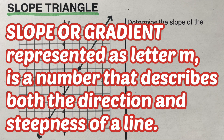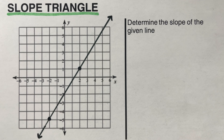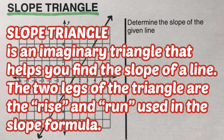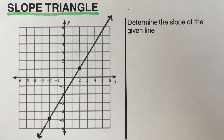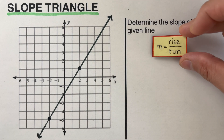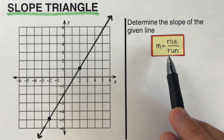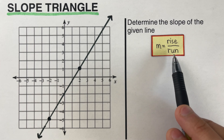So how do we determine the slope? In this video, we're going to use a slope triangle. By definition, a slope triangle is an imaginary triangle that helps you find the slope of a line. The two legs of the triangle are the rise and the run, which are used in the formula for slope. The formula for slope, represented as letter M, is equal to rise over run.